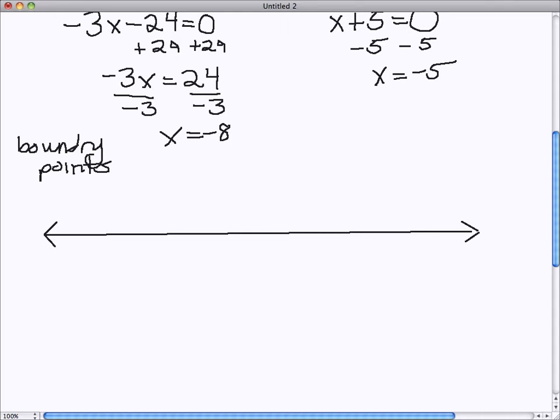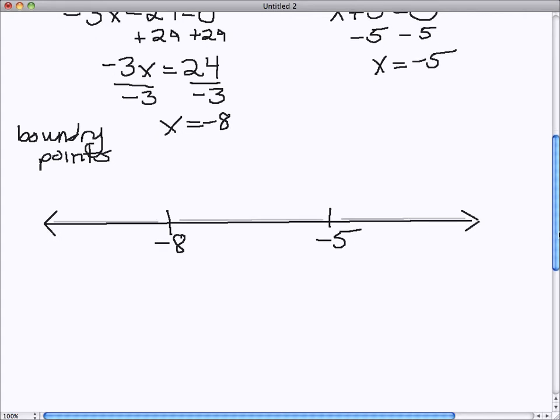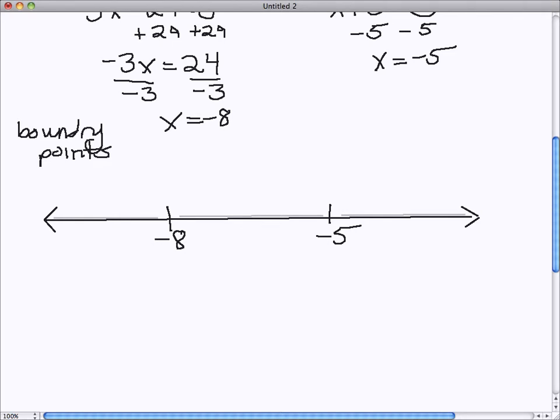And these are what we call boundary points, and they essentially divide our number line into three boundaries, or regions. And we want to find out which regions are going to be solutions. So we have the negative 8 and the negative 5. And they will take our number line and divide it into these three boundaries. We have area number 1, which is to the left of negative 8, area number 2 between the two of them, and area number 3 to the right of negative 5.